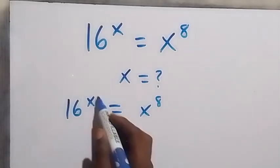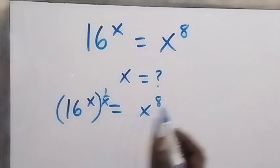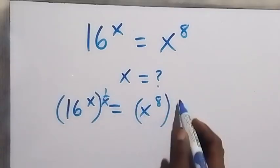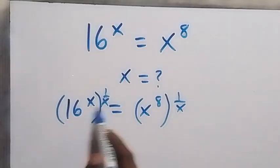First, let's remove this power of x and multiply both powers by 1 over x. Also multiply this power by 1 over x. Then from here, since this power multiply,